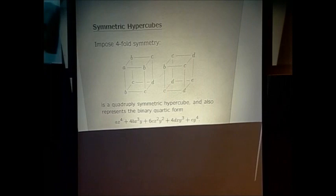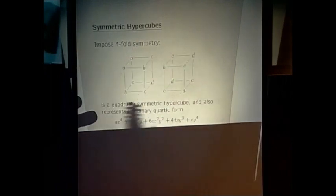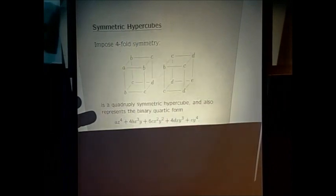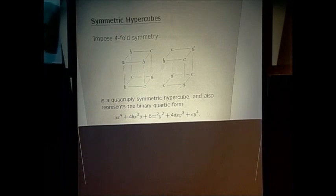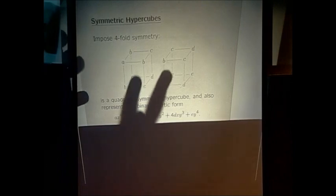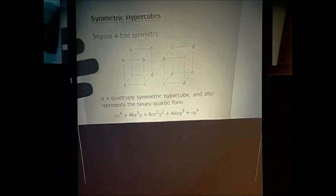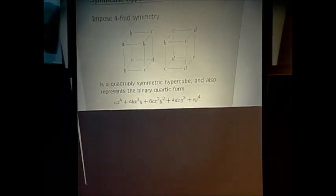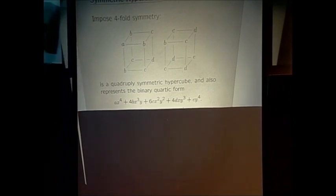If you act by GL2Z on this quadruply symmetric hypercube, that's equivalent to acting on the binary quartic form — just as triply symmetric cubes correspond to binary cubic forms, which in turn generalizes the fact that symmetric square matrices are quadratic forms. So if you have a four-dimensional matrix and look at its totally symmetric case, you get a binary quartic form. The theorem specializes to a statement about binary quartic forms under the action of GL2.